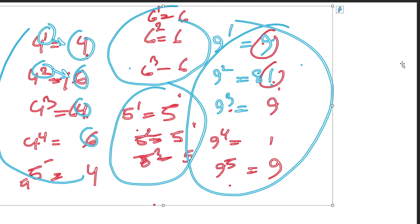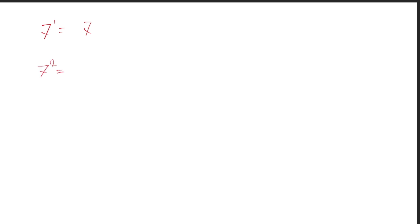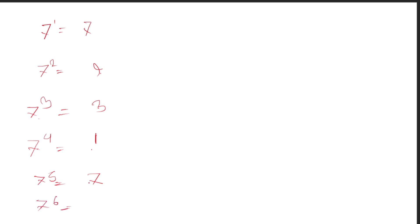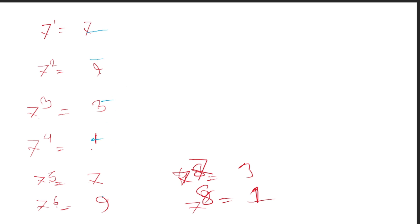7 to the power — 7 squared is 49. 7 to the power 6, 7 to the power 7. The pattern for 7: 3, 7, 2, 1 — wait, it is 7, 9, 3, 1. That is the cycle for 7: 7, 9, 3, 1, repeating in a cycle of 4.